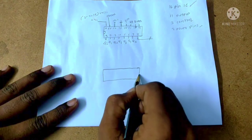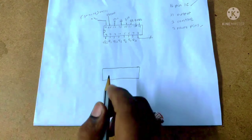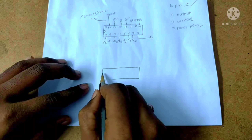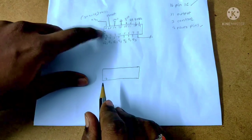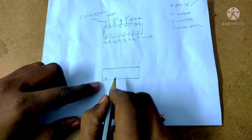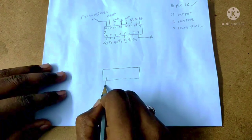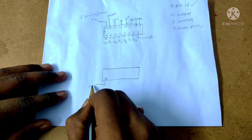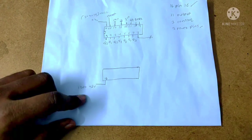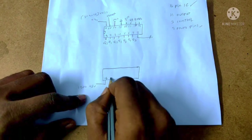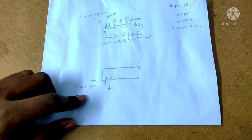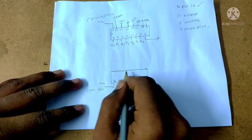I am drawing the circuit diagram now with the output pins. I will draw the 16-pin IC layout. The 16th pin is placed at the top, set at 5 volts, and the 8th pin is the ground pin.